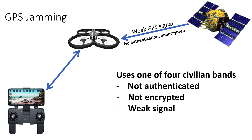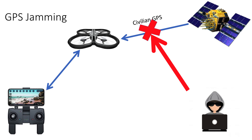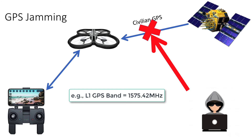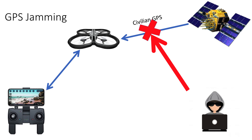The second GPS threat is jamming — a very old threat that's been used in electronic warfare by militaries for dozens and dozens of years. The issue here is that GPS satellite signals are very weak. If a threat actor is able to create a stronger signal on the same frequency being used by the civilian GPS satellite, then the drone is unable to receive that GPS information, which means the drone is essentially flying blind. If it needs geolocation information, it just doesn't have it.